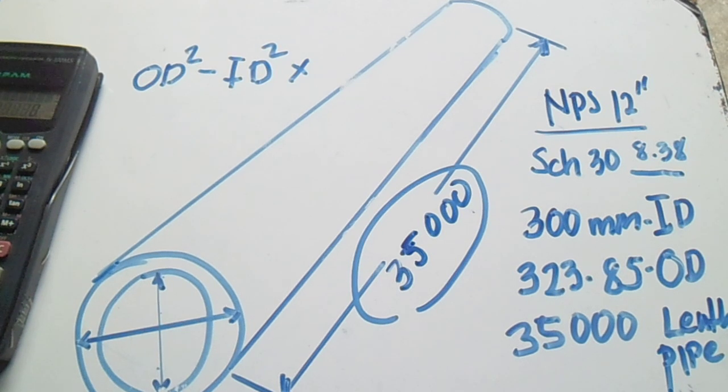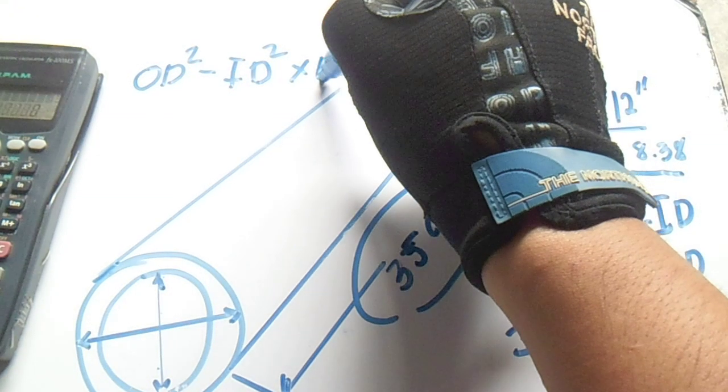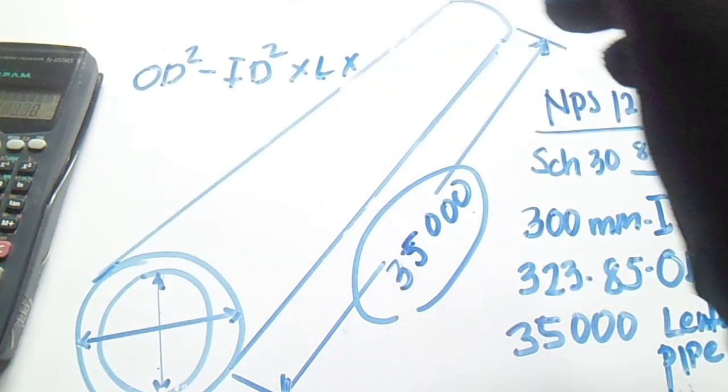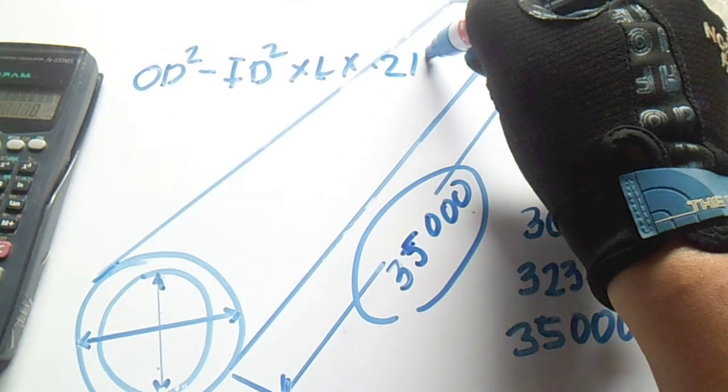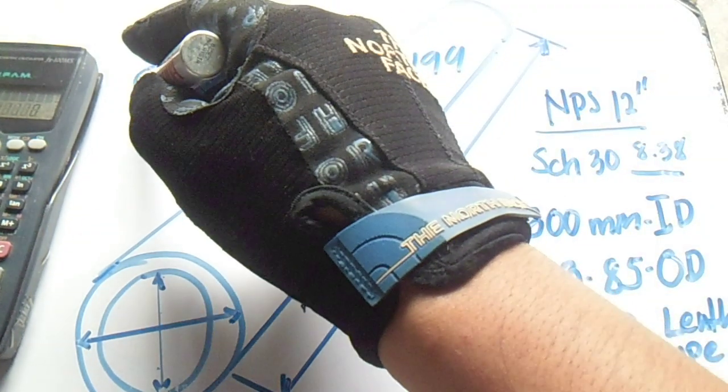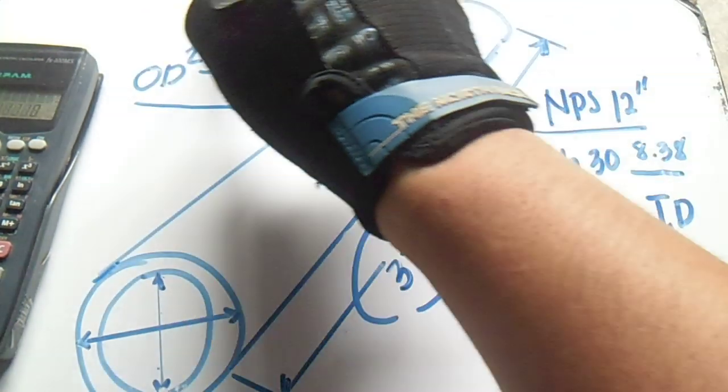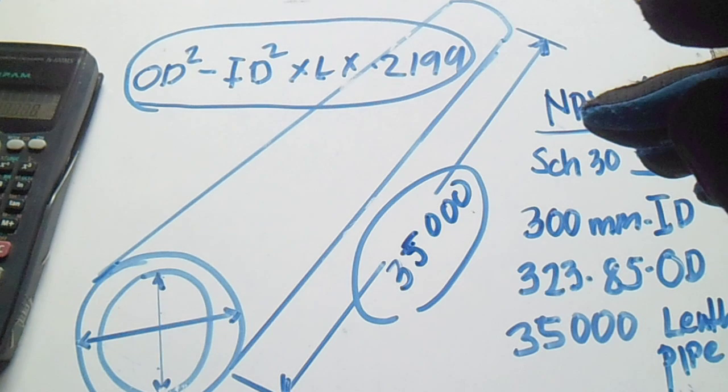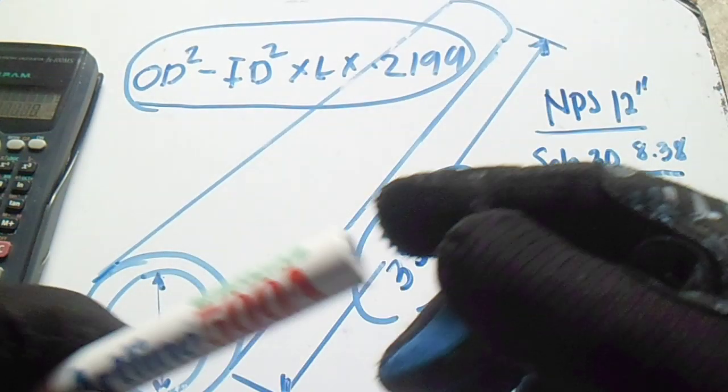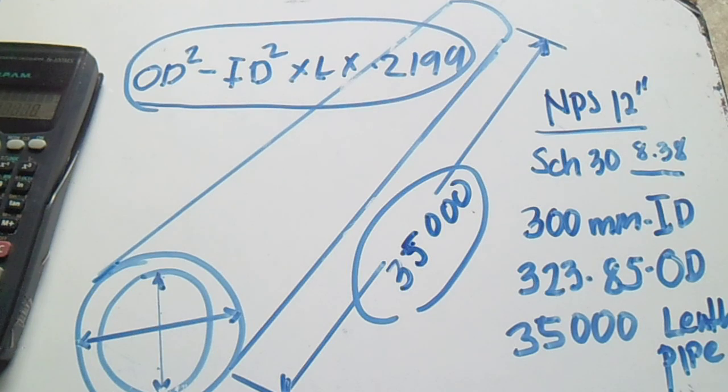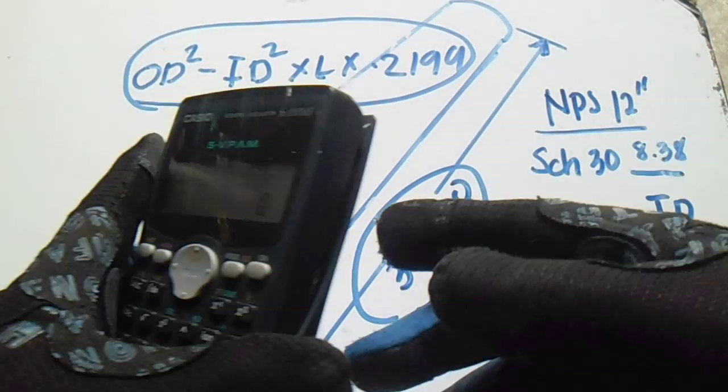The constant is 0.2199. This is the formula to find the approximate weight of pipe. We will compute this given data.